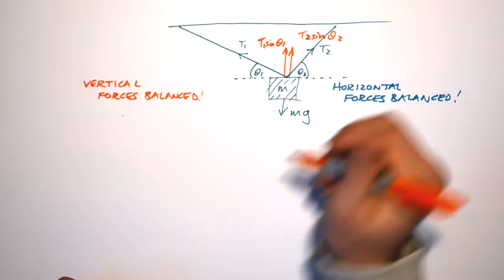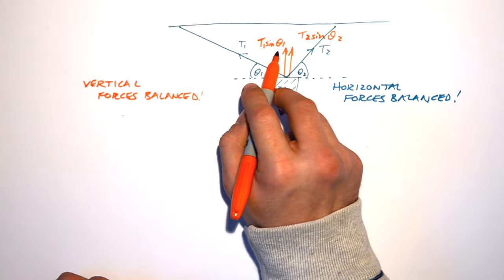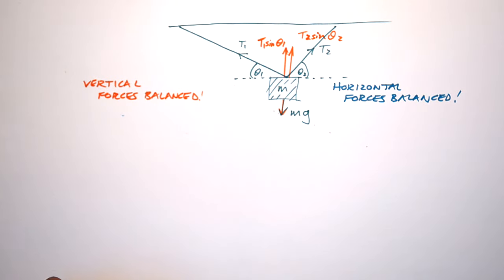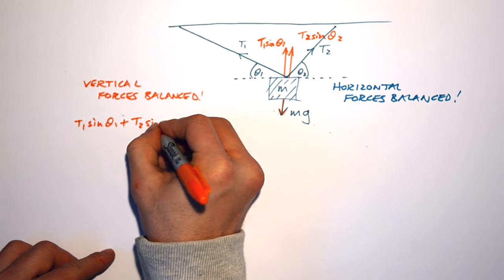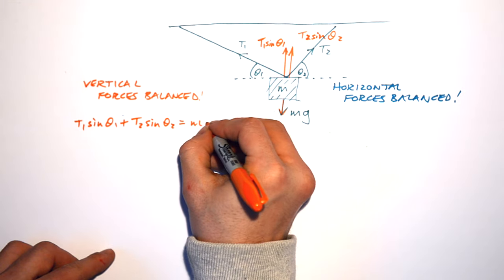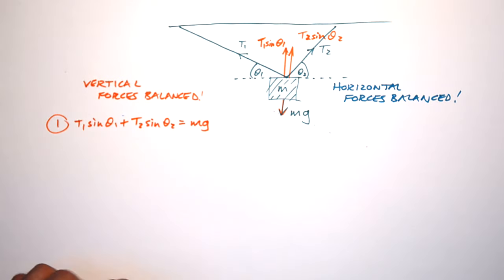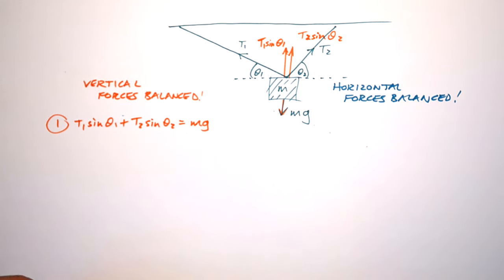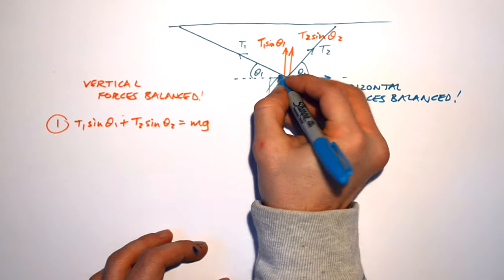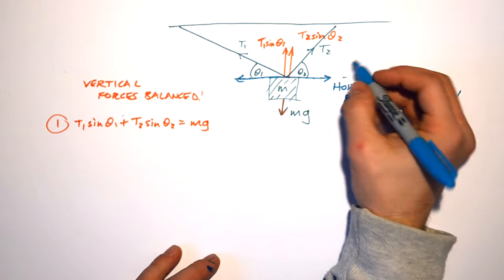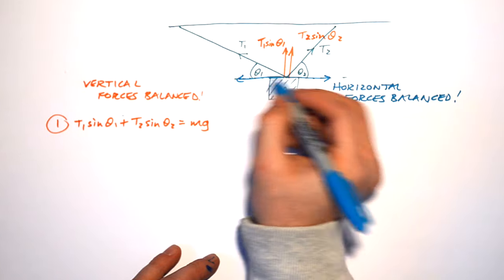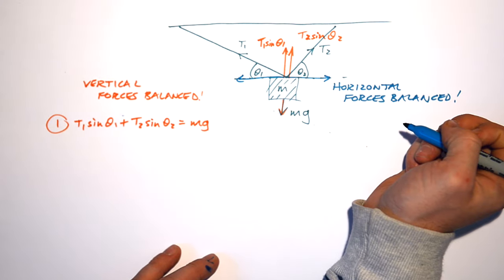We have mg pulling downwards and T1 sin θ1 plus T2 sin θ2 pulling upwards. Since they're balanced, we get equation 1: T1 sin θ1 + T2 sin θ2 = mg. I know the horizontal components are also equal since there's no horizontal acceleration. There's no horizontal component to mg, so the horizontal balance involves only T1 and T2.